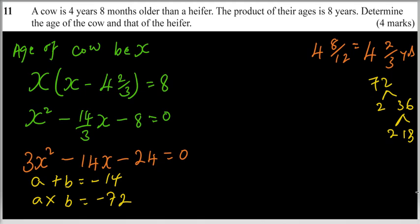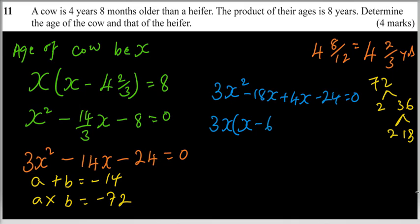We can use that to get our expression. So we say this is 3X squared minus 18X plus 4X minus 24 equals 0. We factor out what is common.